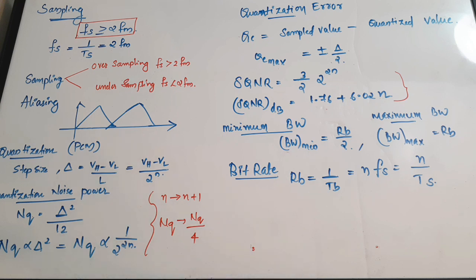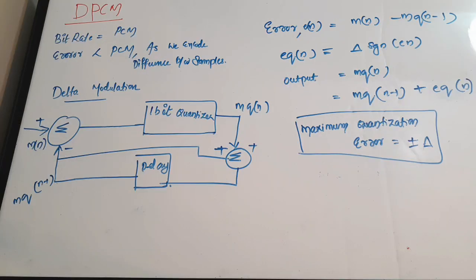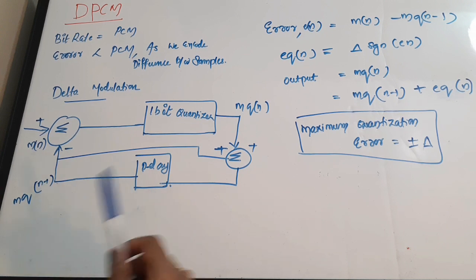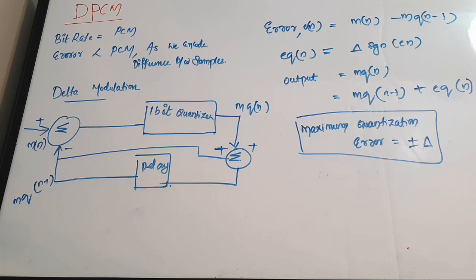In DPCM (differential pulse code modulation), we encode the difference between samples rather than quantizing the samples directly. The bit rate is the same as PCM, but the error is less than PCM because we are encoding the difference between samples.